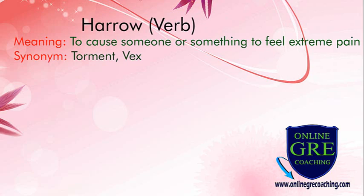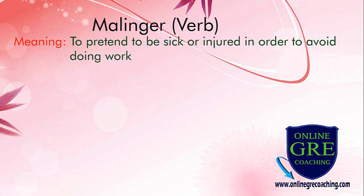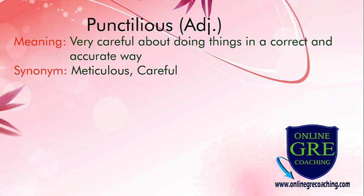Synonyms for harrow are torment and vex. Next word is incursion, means a sudden attack or act of entering a place that is controlled by enemy. Synonym is invasion. Next word is malinger, means to pretend to be sick or injured in order to avoid doing work. Next word is punctilious, means very careful about doing things in a correct and accurate way. Synonyms are meticulous and careful.